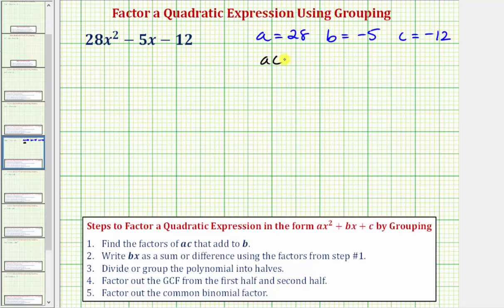So a times c, or ac, is equal to 28 times negative 12, which equals negative 336. So we're looking for the factors of negative 336 that add to b, which equals negative five. We're looking for two numbers that when we multiply them, we get negative 336, and when we add them, we get negative five.